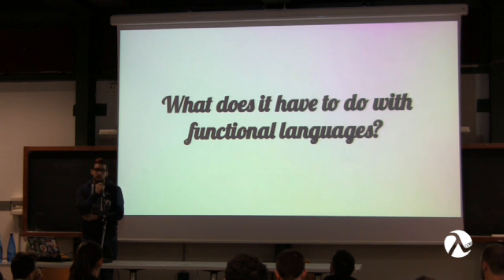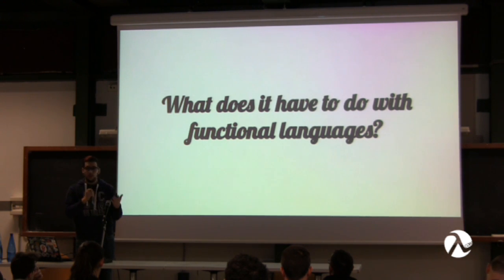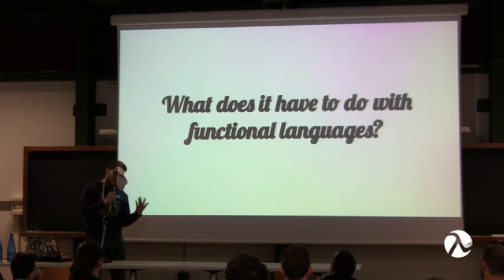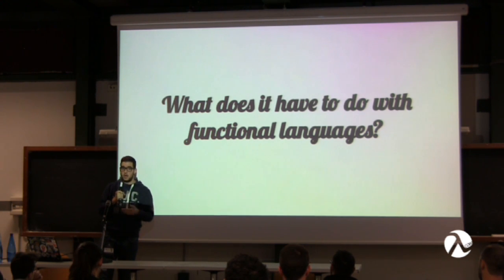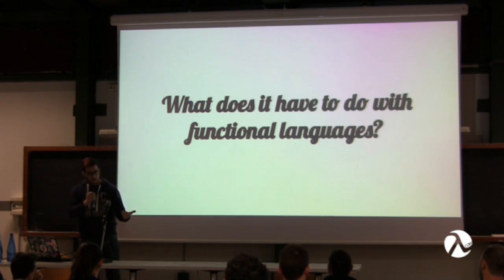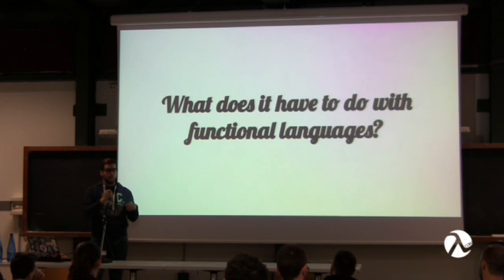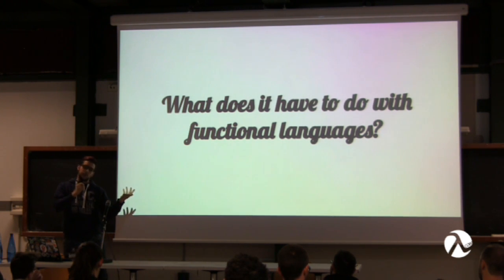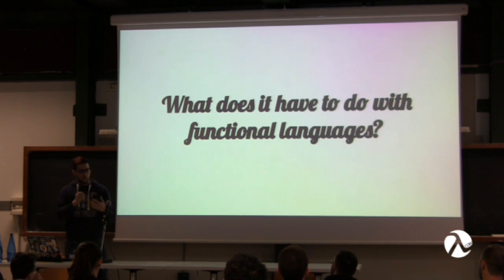So what does Rust have to do with functional languages? It's not a pure functional language — it doesn't even have higher-kinded types. Will it have them? Probably in the future; there are plans and people interested, but no decision has been made yet. However, it has a lot of functional concepts that go beyond just having first-class functions you can pass around. It has a lot of functional ideas in its type system.